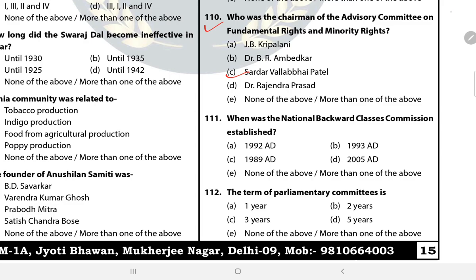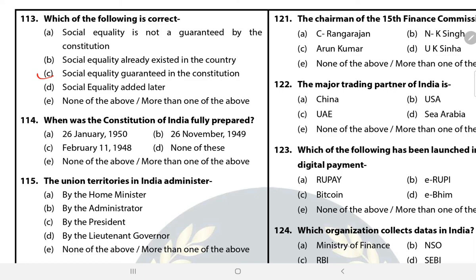Question 111: When was the National Backward Classes Commission established? Answer — 1993 AD. Question 112: The term of parliamentary committees is? The answer is more than one of the above. The tenure of most committees related to the Indian Parliament is one year, but some committees' tenure is not fixed as they work till the term of the Lok Sabha. Question 113: Which of the following is correct? C — Social Equality guaranteed in the Constitution under Articles 14-18.